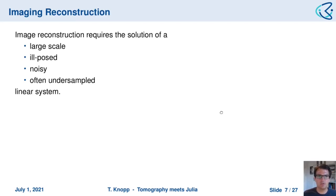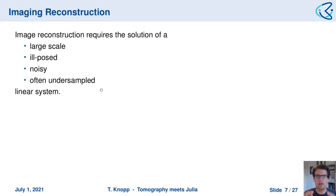Image reconstruction involves solving such a linear system, which is typically large-scale, ill-posed, and noisy. In many cases the linear system is also underdetermined, which results from undersampling — because in practice we want to measure only a few points in order to achieve high temporal resolution, and this effectively leads to undersampled data.